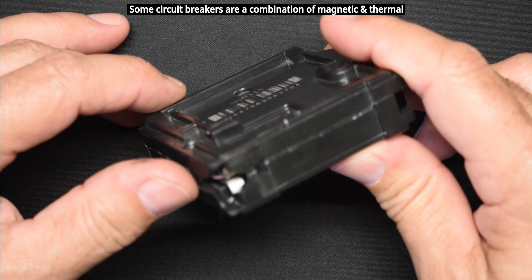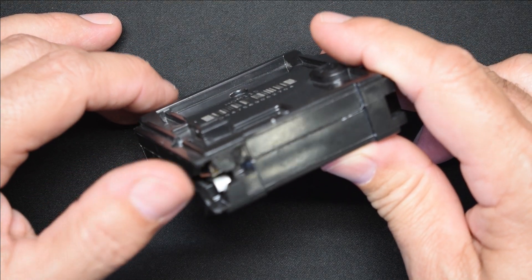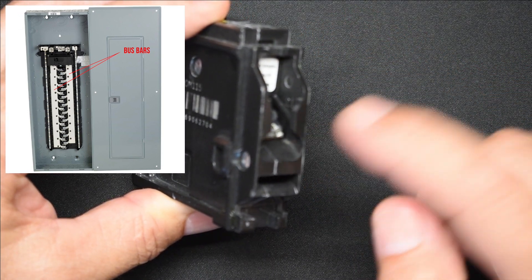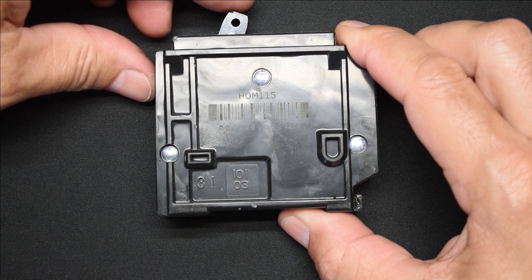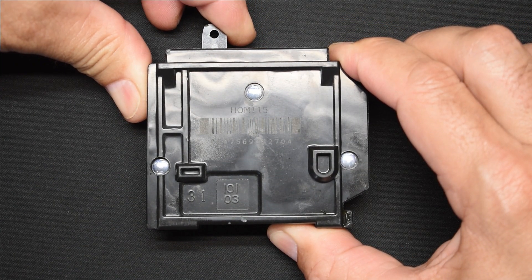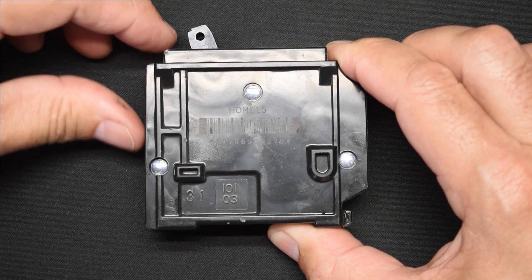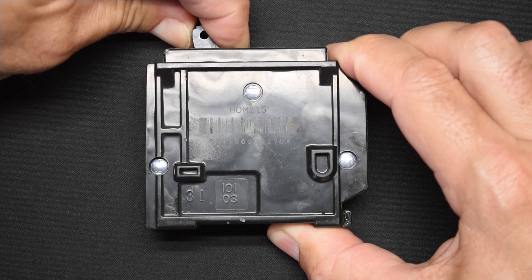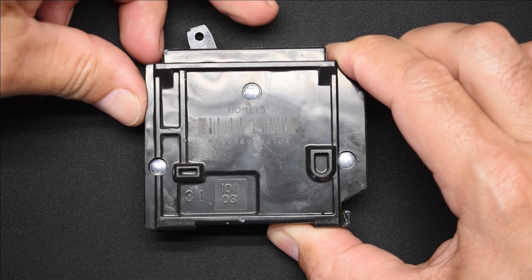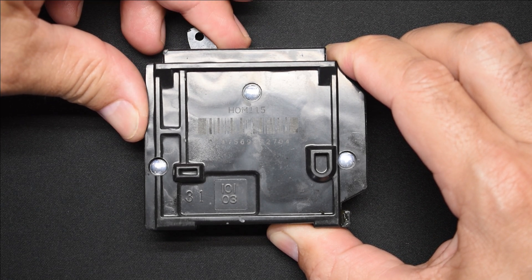Right here you can see a metal clip that snaps into the bus bar in the breaker panel, and the branch circuit is connected to the screw right over here. In the event the circuit breaker trips, the lever is going to end up in the center. To reset it, you'd have to push it all the way back to the left and then to the on position. But sometimes when the breaker trips, it may get stuck in the center and won't lock in.